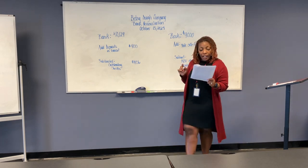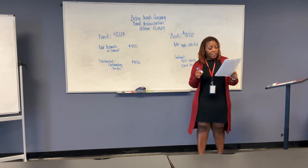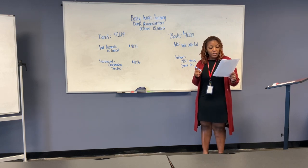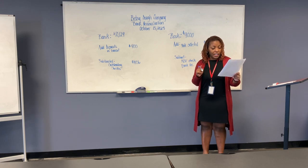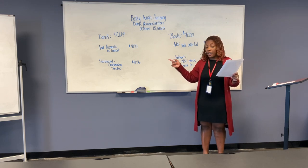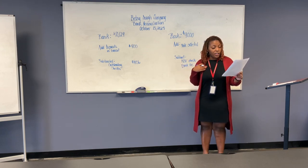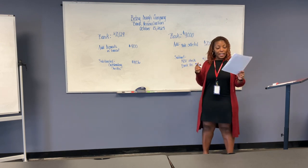Lastly, there is a difference of $18. Check number 141 was written for $235 for advertising expense and cleared the bank for $235, but we recorded it as $253. So we have money coming out that didn't need to be, meaning we need to add the $18 back to the book side.